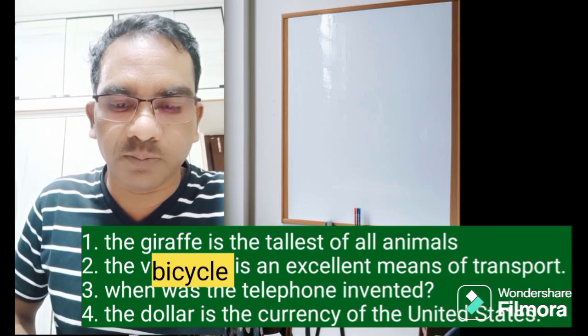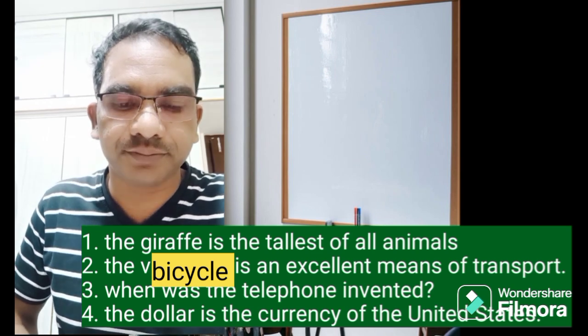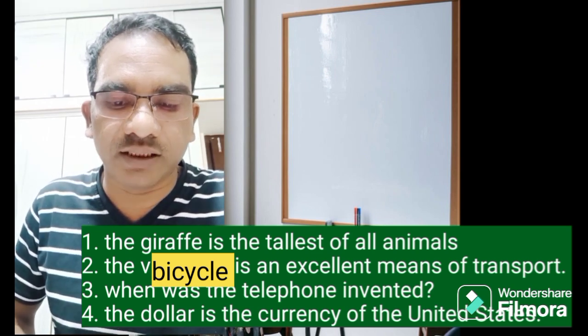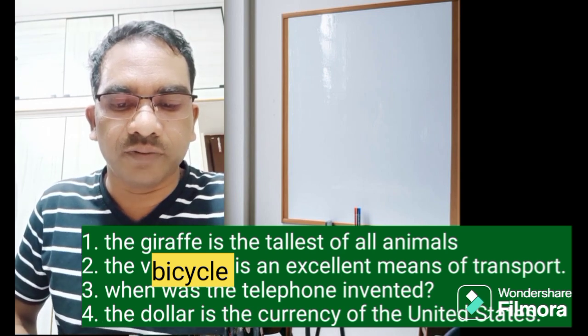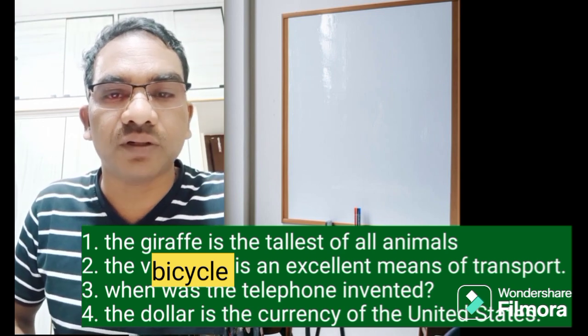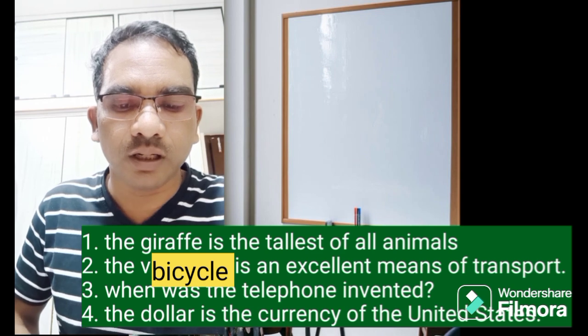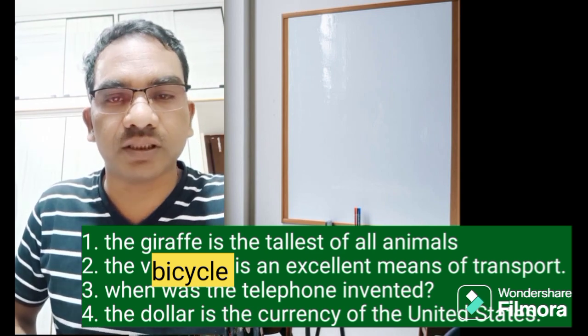Now, let's look at the examples. The giraffe is the smallest of all animals. The bicycle is an excellent means of transport. When was the telephone invented? The dollar is the currency of the United States.